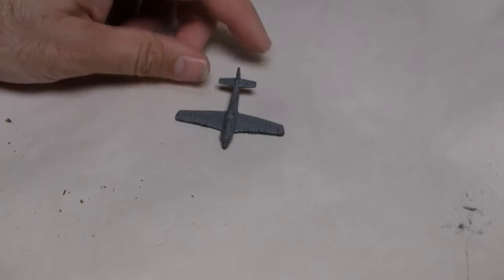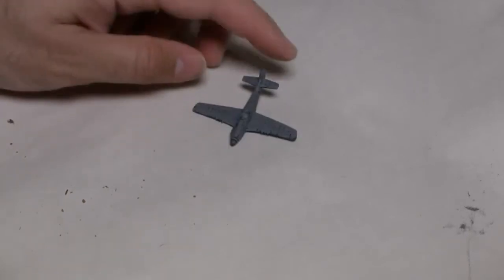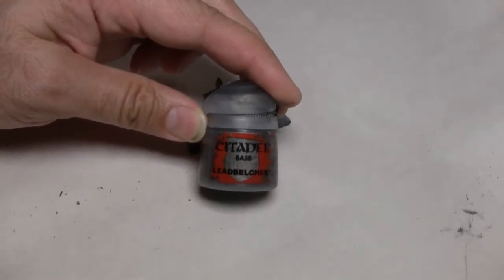I've got a pretty simple base layer of gray down. It's not perfect, but it doesn't need to be, because now is the time to give the Mustang its iconic silver look. And for that, we're going to do a lot of dry brushing.